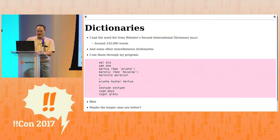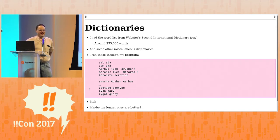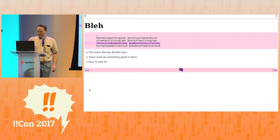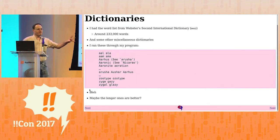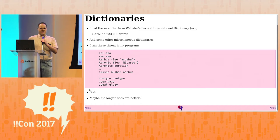I had the word list from Webster's Second International Dictionary, which I didn't know at the time had been laboriously entered by Dennis Ritchie for very much the same reason. I had some other miscellaneous dictionaries, and I fed them to my program. The output was every single anagram in this 250,000-word list, and it sucked.